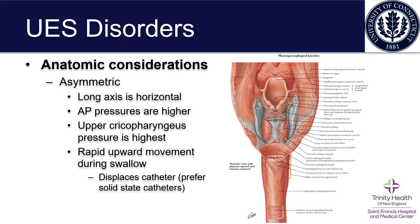By way of upper esophageal sphincter disorders, the first thing to think about are the anatomic considerations, and this is certainly not an easy anatomic region of the body to comprehend. It's asymmetric in that its long axis is horizontal, as you can see in the image. The anterior-posterior pressures are higher, and really the highest pressures occur at the upper cricopharyngeus.